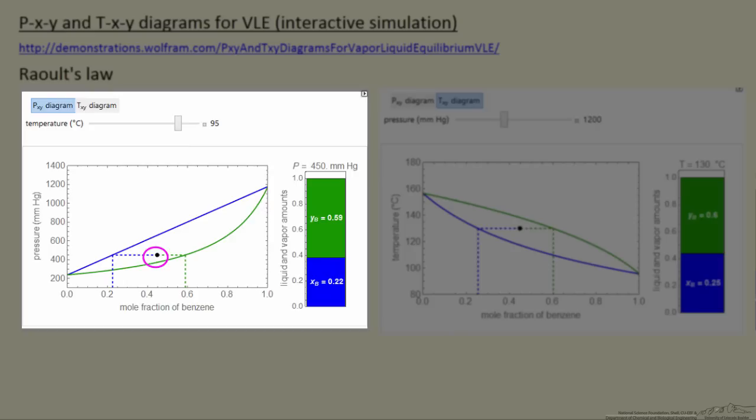And so the plot on the left, the green line, is the pressure versus the vapor mole fraction of benzene. The blue line is the pressure versus the liquid mole fraction. Benzene is the more volatile component in this simulation.